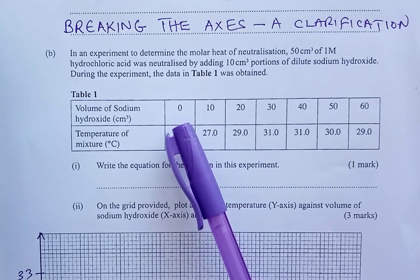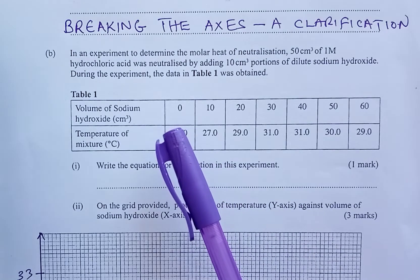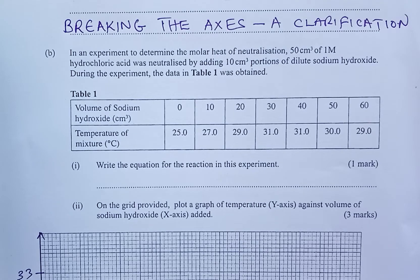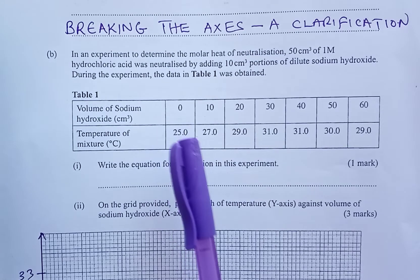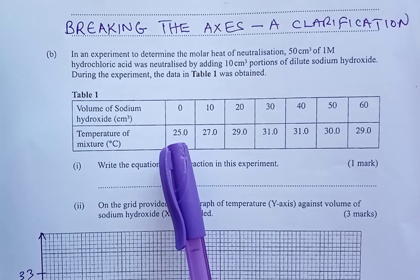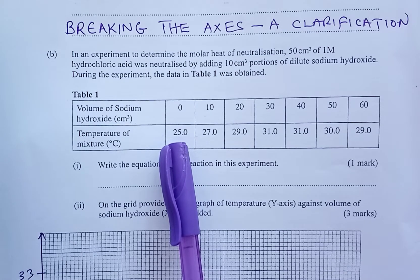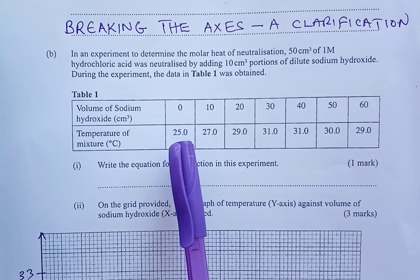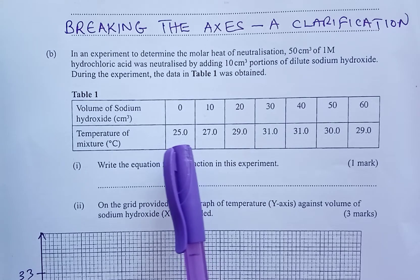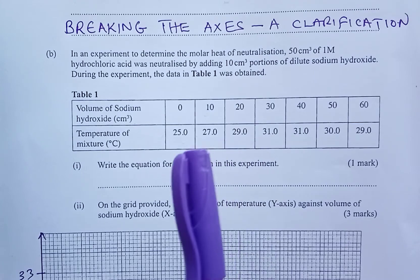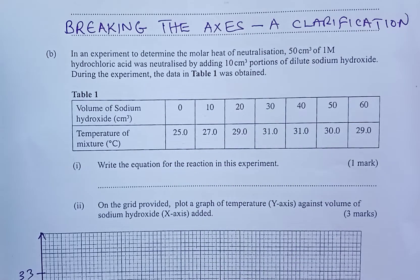We want to use a sample question that tested the skill of graph drawing in chemistry paper 2. A lot of emphasis is going to be laid on the table. For table 1 we have volume of sodium hydroxide and temperature of the mixture. You are supposed to plot a graph of temperature against volume of sodium hydroxide. So how are we supposed to draw the graph correctly and how are we supposed to break the y-axis correctly? So in this video I present three techniques that you can use in chemistry to avoid what we call a hanging curve or a hanging graph.